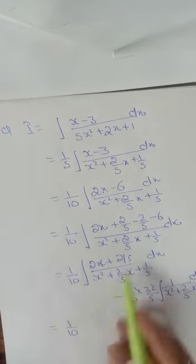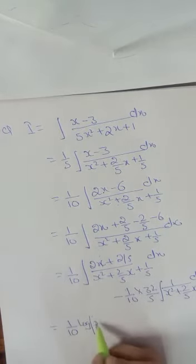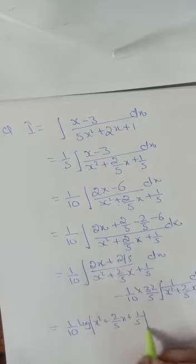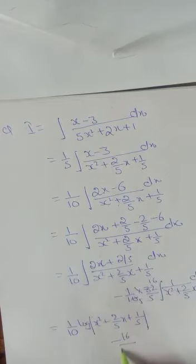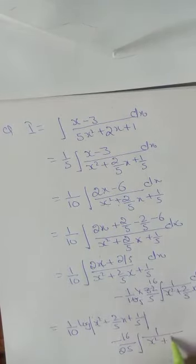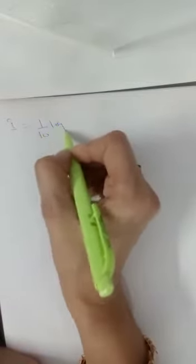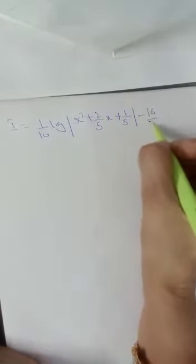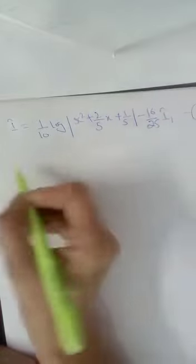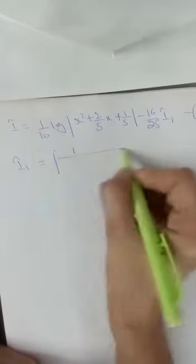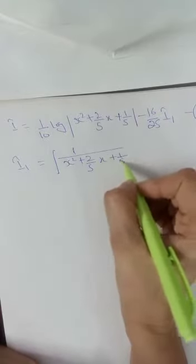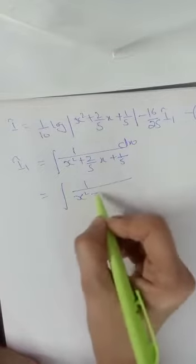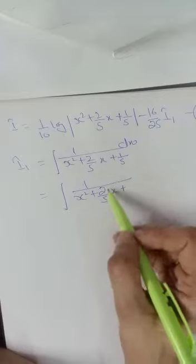So 1/10 times the first part is f'(x) upon f(x), which gives (1/10) log|f(x)|. Simplifying the constant, we get minus 16/25 times the integral of 1 upon (x² + (2/5)x + (1/5)) dx — call this I₁.